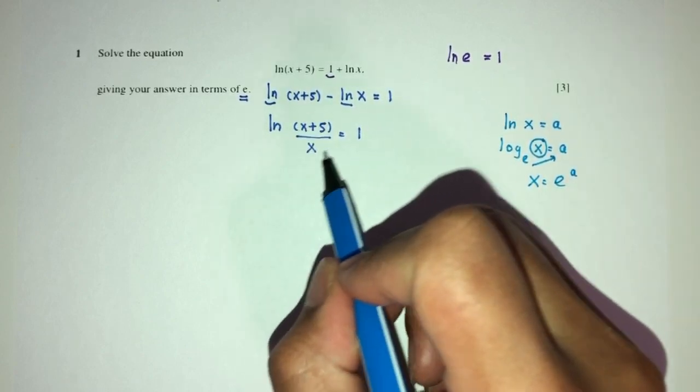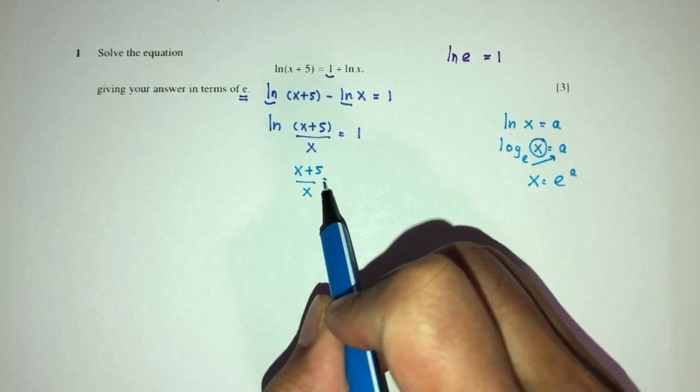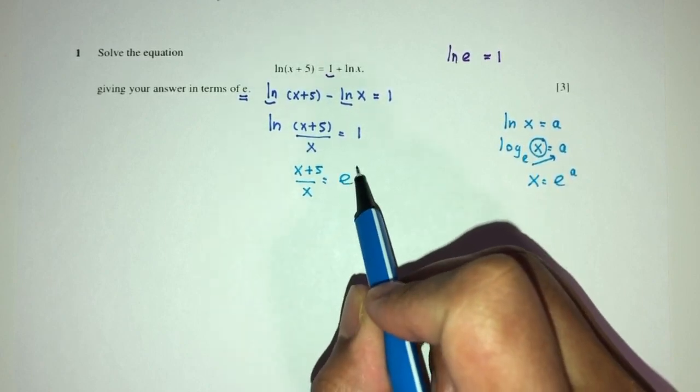So similarly, to find the inside value, I have to send the base, which is exponential power 1 over here.